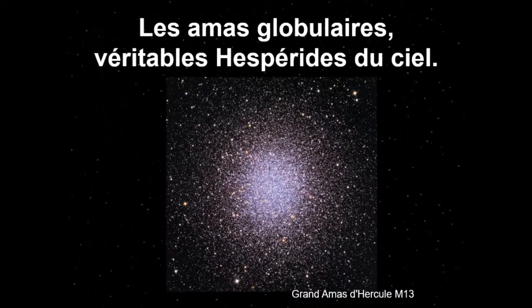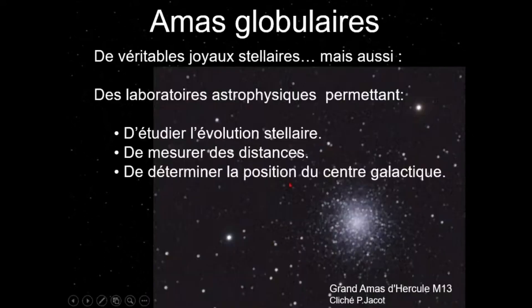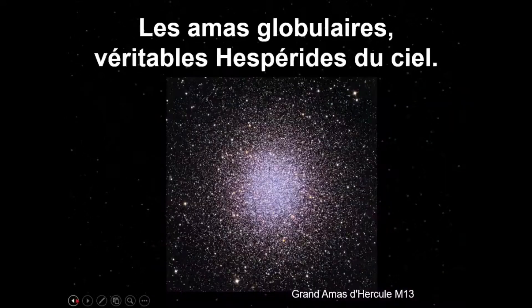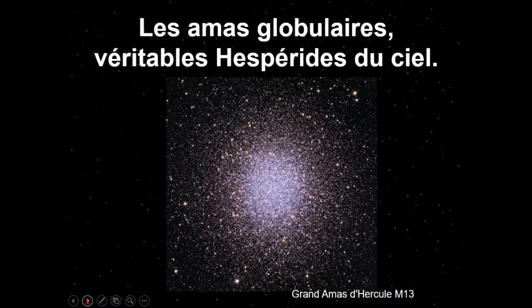Merci Philippe et merci à tous d'être venus. Les amas globulaires, on peut les appeler des épades d'étoiles — ce sont des mouroirs. C'est là que les étoiles finissent. Pas toutes les étoiles, mais celles présentes dans les amas globulaires sont en grande partie très âgées. Elles ont l'âge quasiment de la galaxie, entre 10 et 15 milliards d'années. Ce sont des étoiles de très longue durée de vie, les plus massives ayant disparu depuis très longtemps.